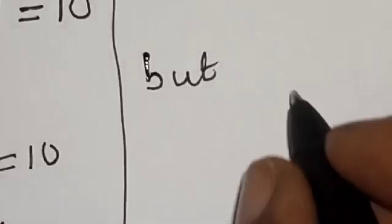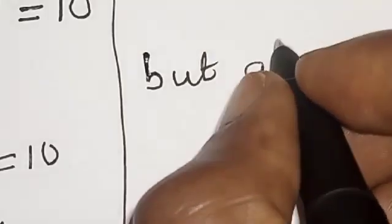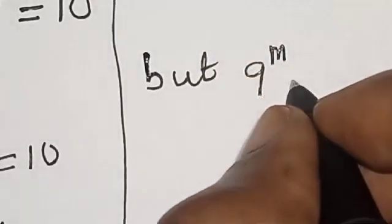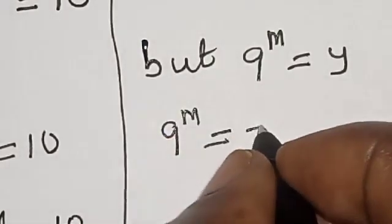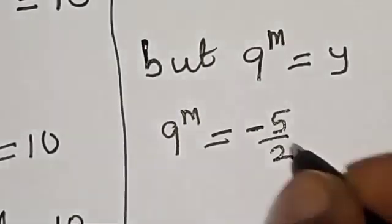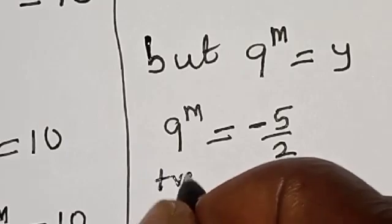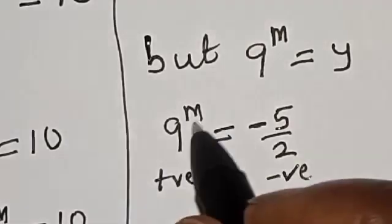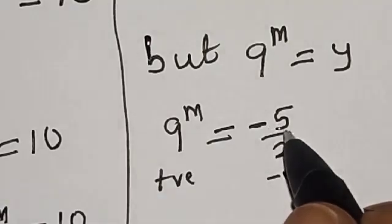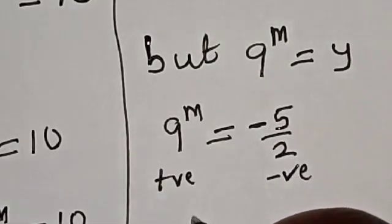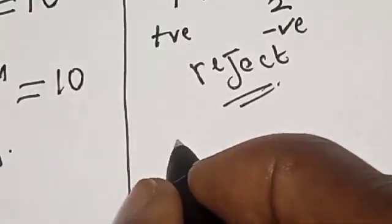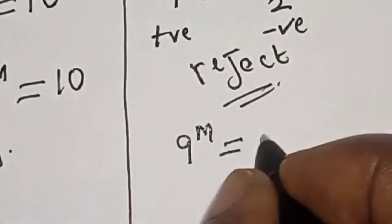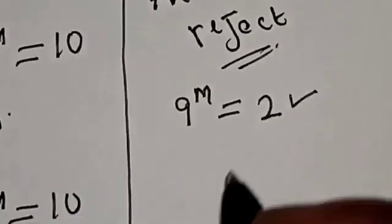Now, 9 raised to power m equals minus 5 over 2 for the first solution. But since the exponential function is always positive, it cannot equal the negative value minus 5 over 2. So that solution is rejected. The only valid solution is 9 raised to power m equals 2. Let's work on this.